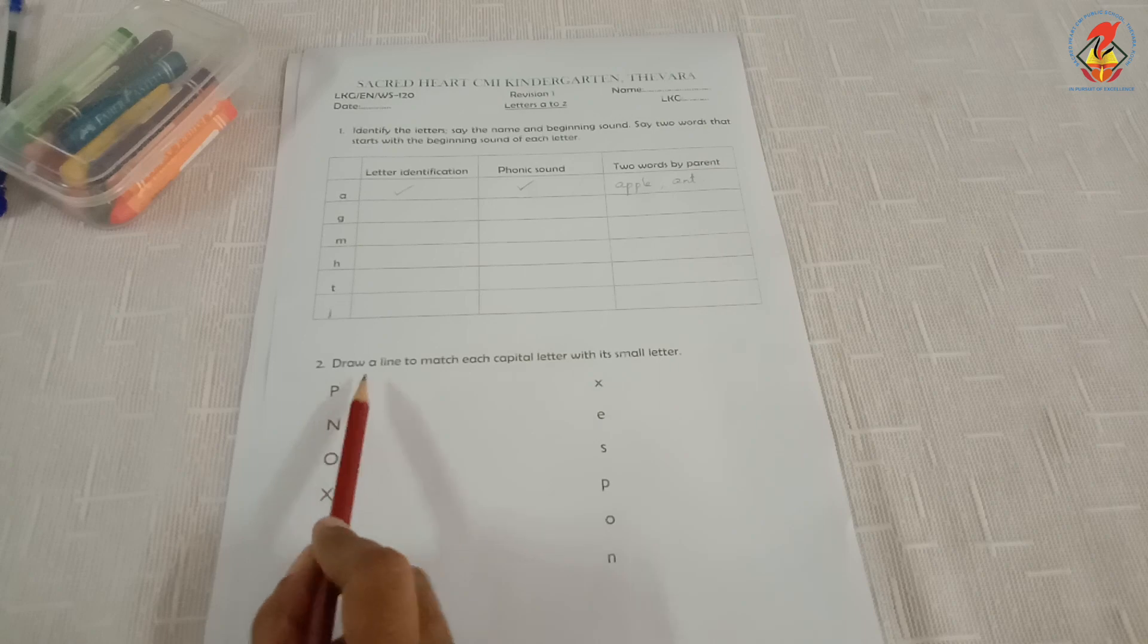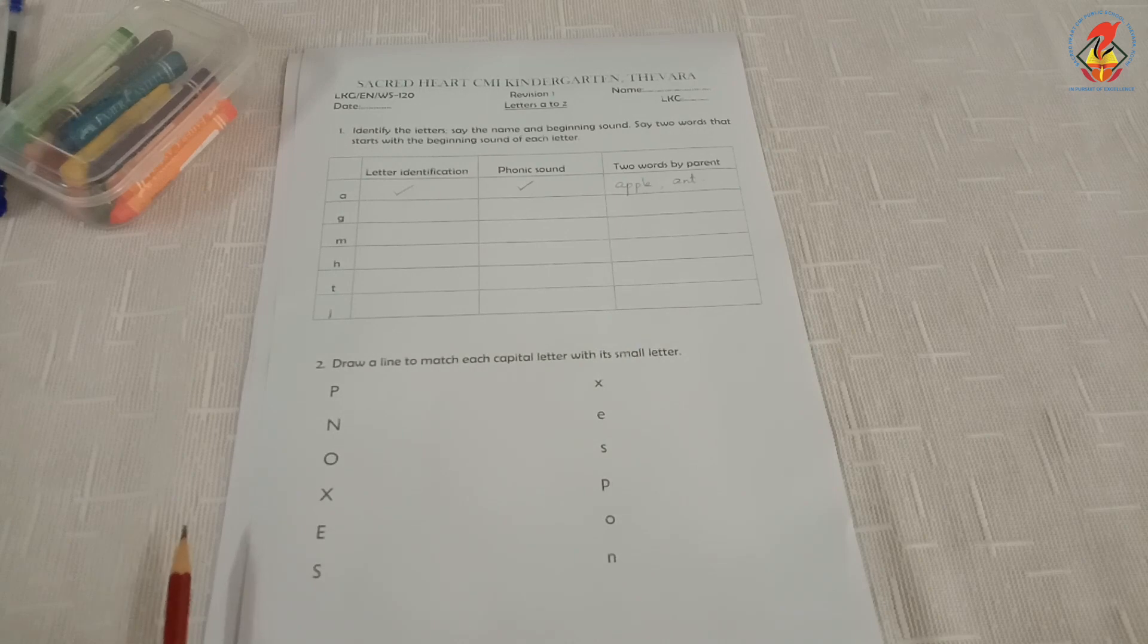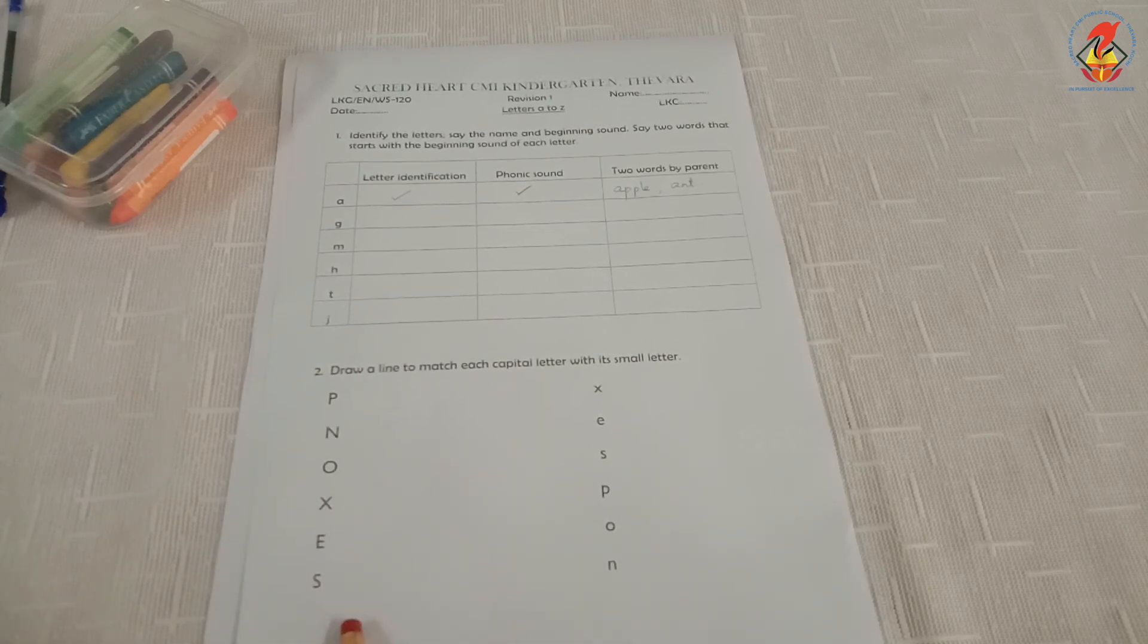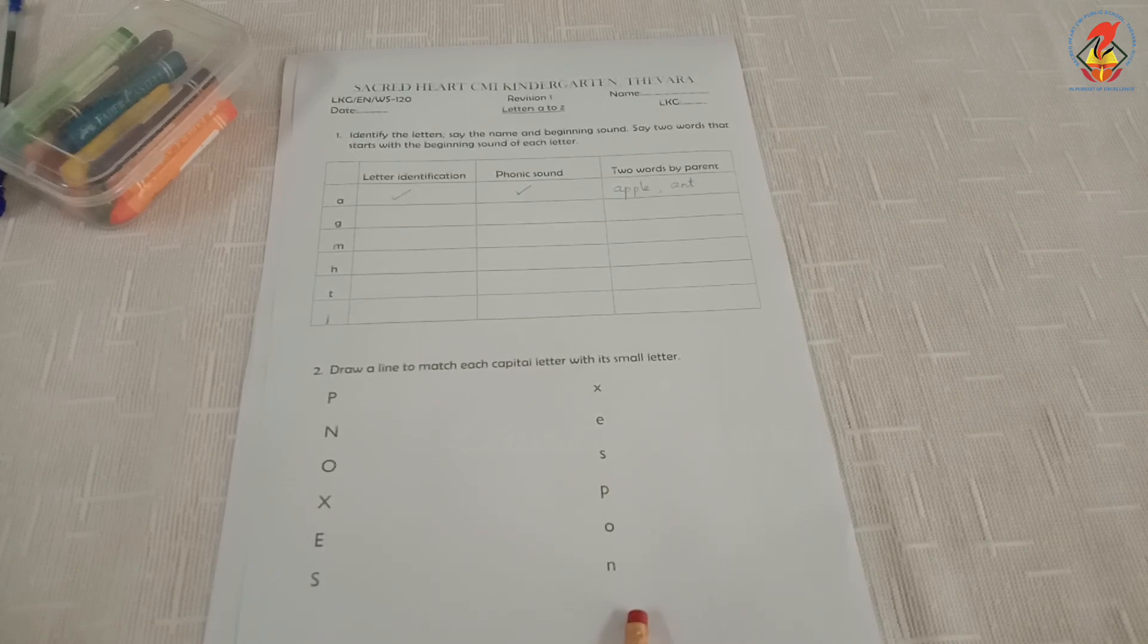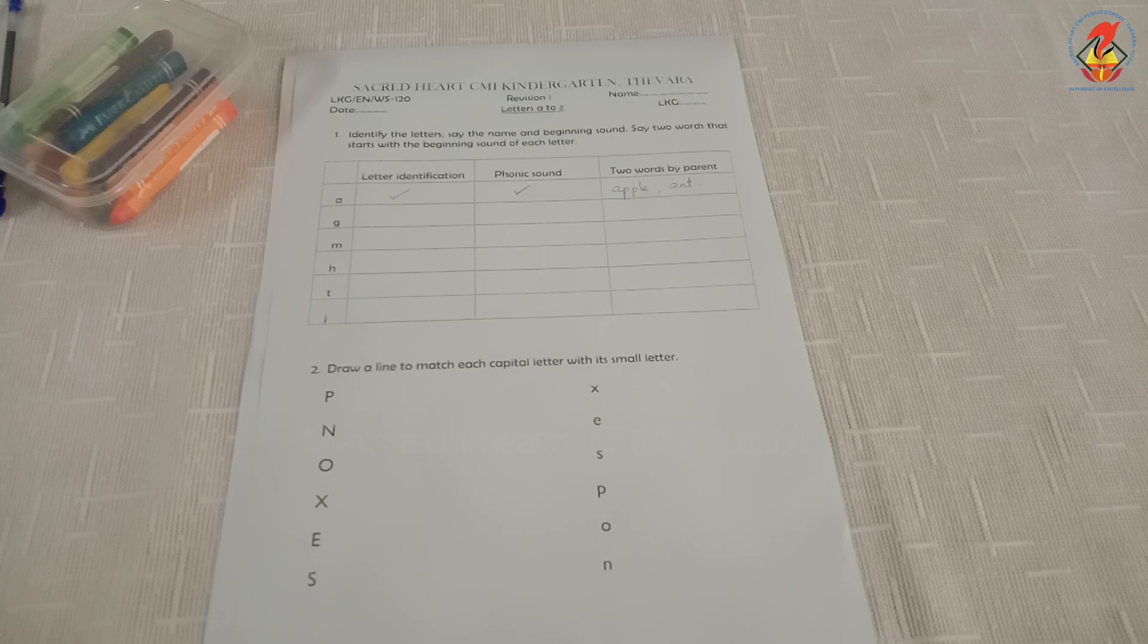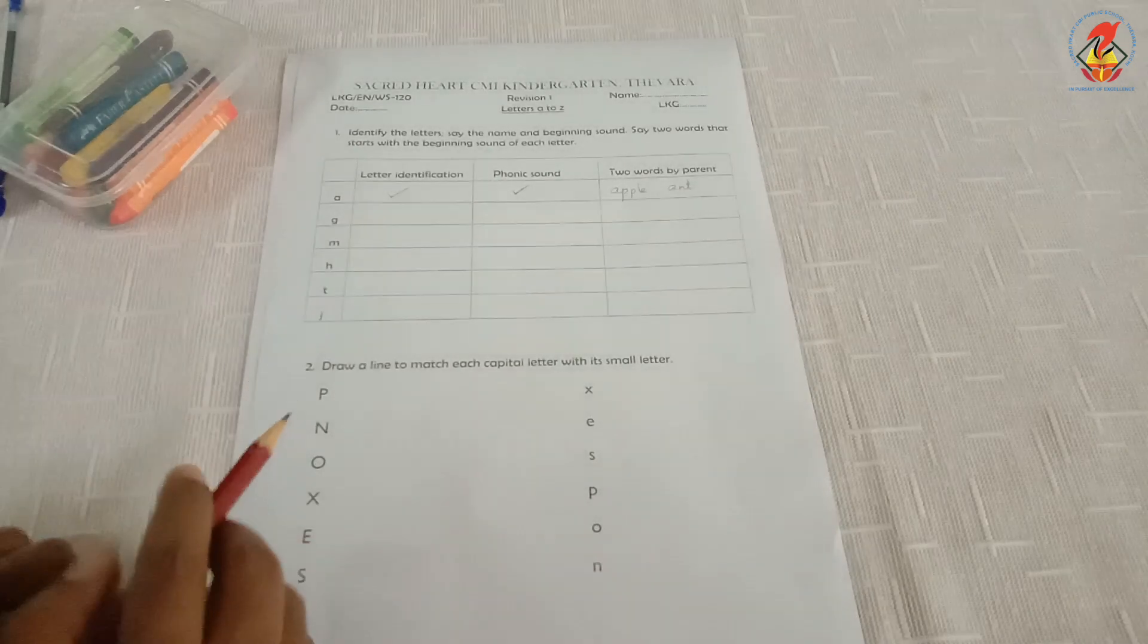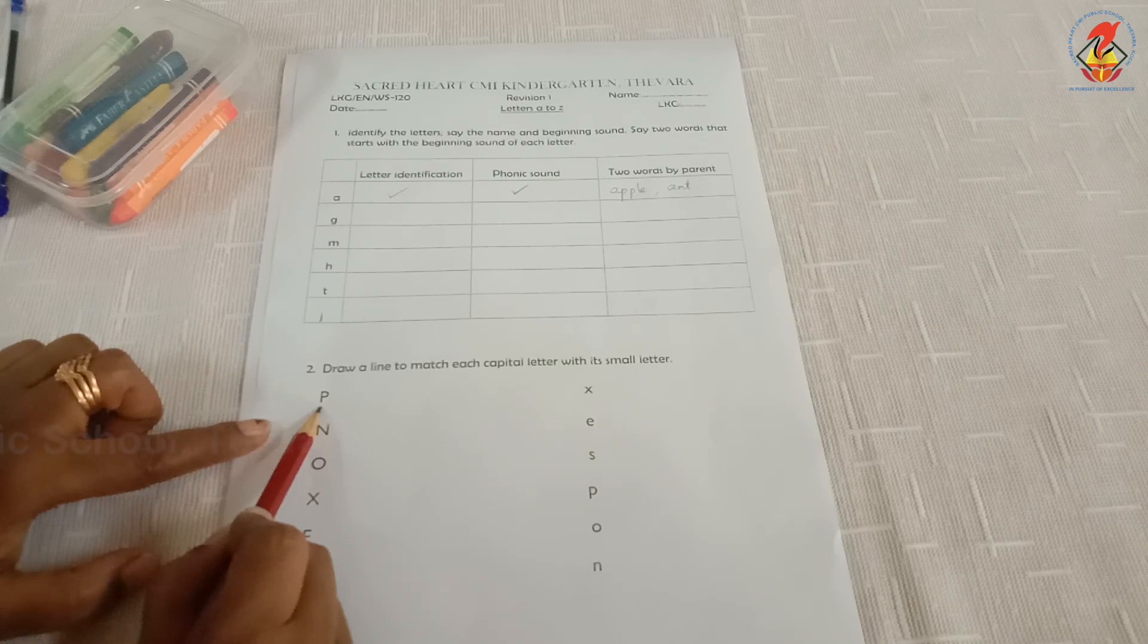The second question, draw a line to match each capital letter with its small letter. Here, one side you can see the capital letters and the other side you can see small letters. You have to identify the capital letter and match to its small letter. Listen carefully and do. For example, which letter is this? Letter P.